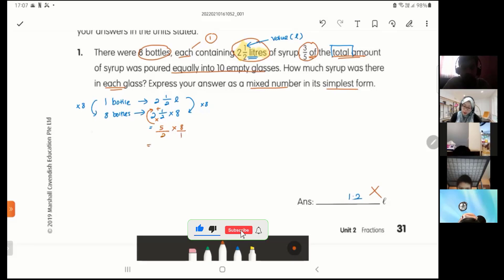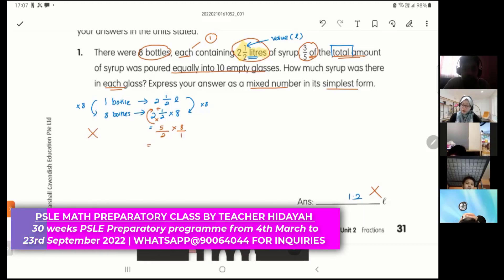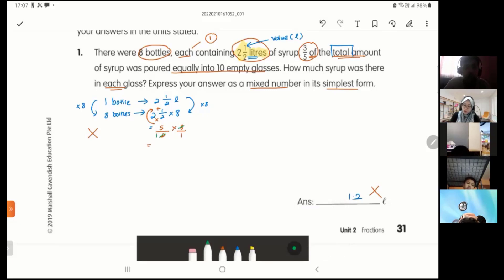Five out of two times eight over one. I look crosswise, see anything which can be simplified first. I have two and eight. Two can divide by two, one, eight divide by two, four. Then you look row-wise, numerator, denominator. Five times four is twenty. Twenty liters. This is my total amount.